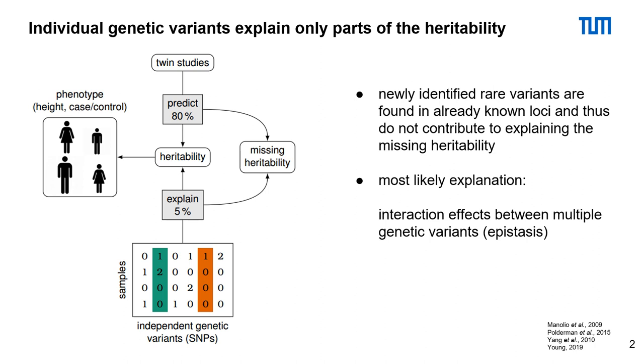In the past, many studies were conducted on the heritability of height. Twin studies predicted about 80% of the heritability. Considering only independent genetic variants can account for about 5% of the heritability. Both studies could not explain the full heritability of height, so most likely epistasis could explain the missing heritability.